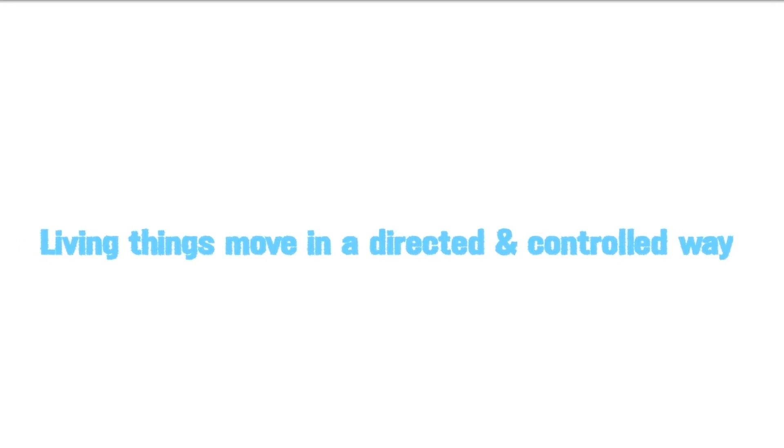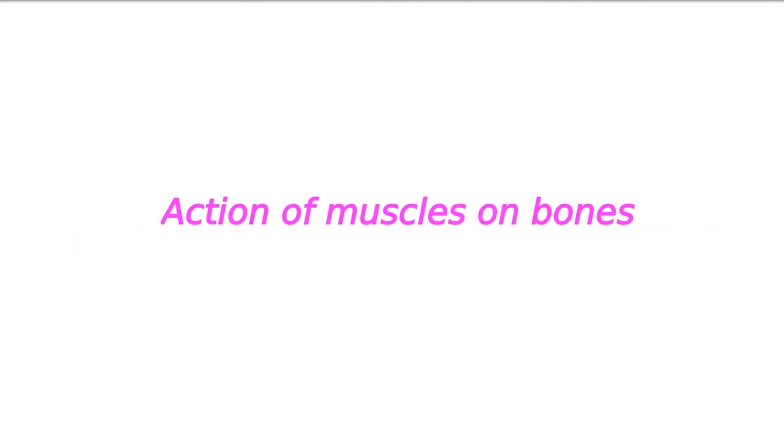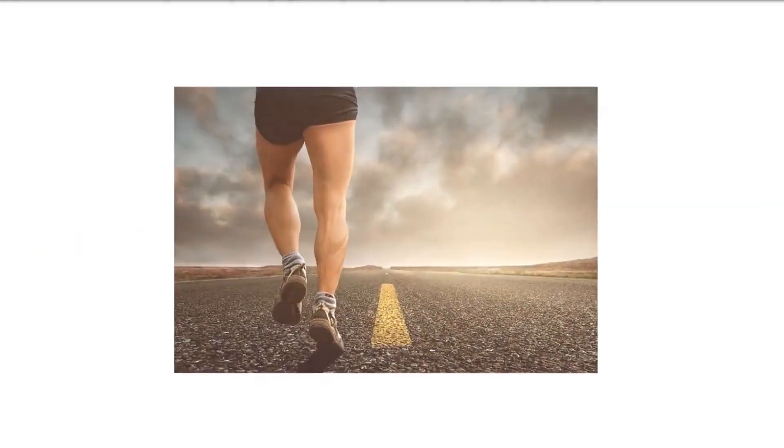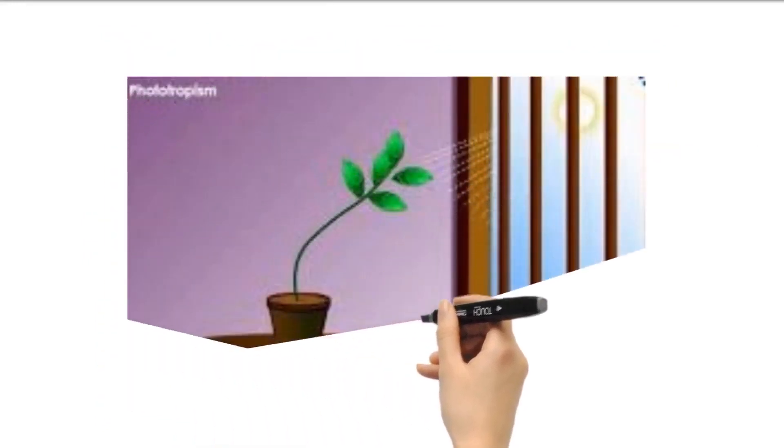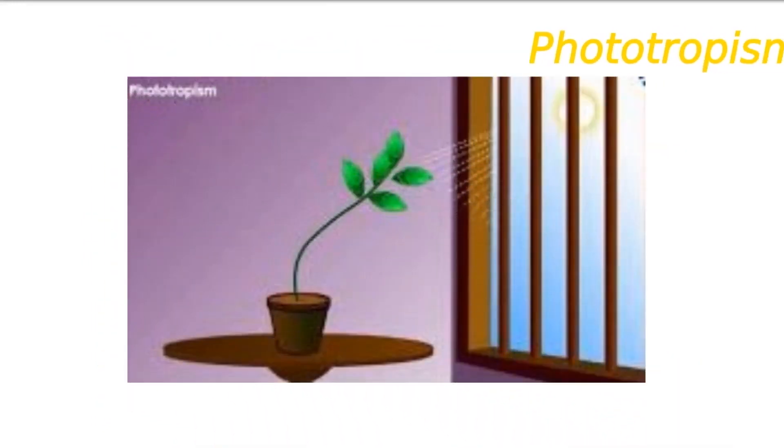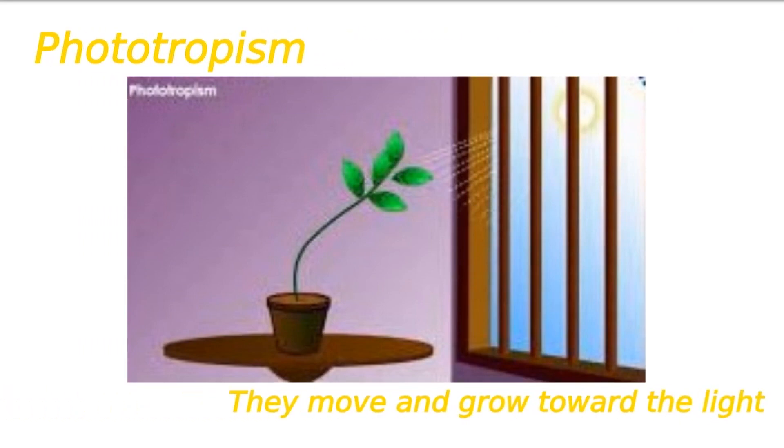Living things move in a directed and controlled way. Animals move by the action of muscles and bones. Plants move in different ways. One of the most typical ways that plants move is through a process known as phototropism. Essentially, they move and grow toward light.